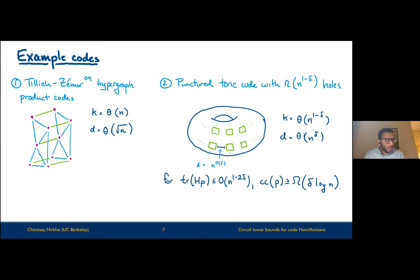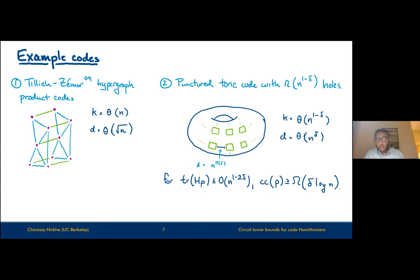Furthermore, our lower bound shows that a constant-depth circuit cannot approximate the ground state energy to accuracy better than order N, even if the Hamiltonian is commuting, such as the punctured toric code. This seems to serve as a limitation on quantum circuit ansatzes like VQE, which may be of independent interest to the algorithmic community.